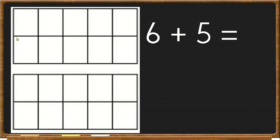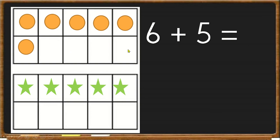So again, I have 2 numbers and 2 10 frames. So my top 10 frame, I'm going to use to make number 6. So 6 counters. And then my bottom 10 frame, I'm going to put 5 counters. Now I have 1, 2, 3, 4 spaces left in my top 10 frame.